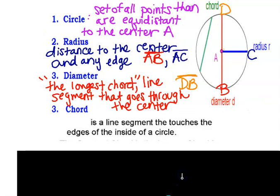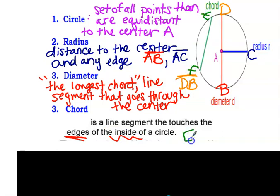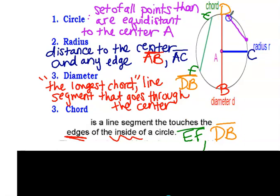The very last definition is a chord — it's a line segment that touches the edges on the inside of a circle. This is important: it's the inside of the circle. So a chord could be this green one right here — EF. The diameter is also a chord, so think of the diameter like a fancy chord. A chord can cut any portion of the circle; it just has to touch two edges and has to be on the inside.